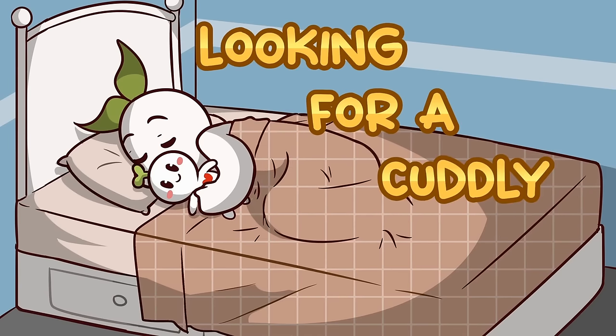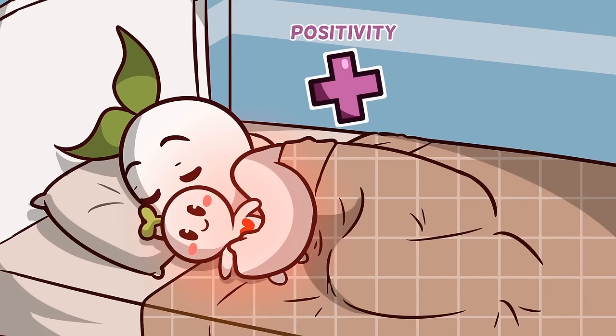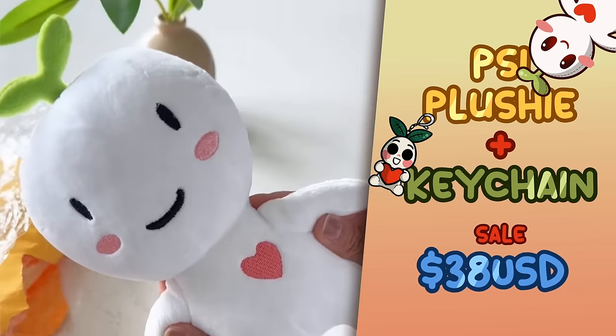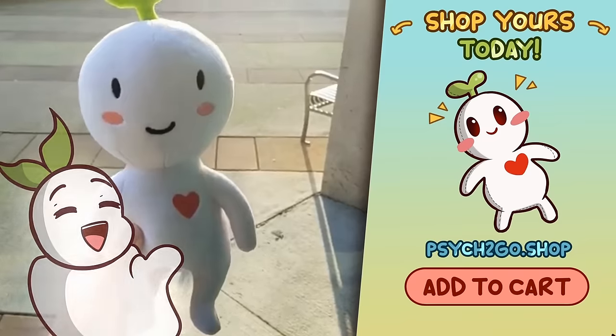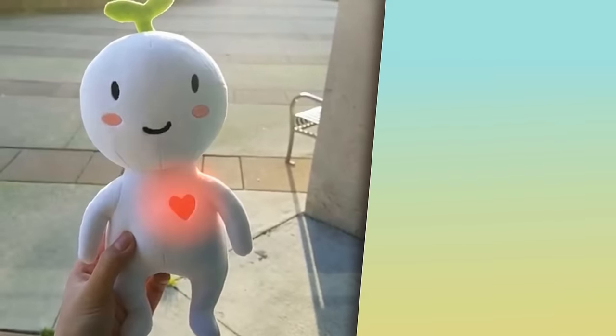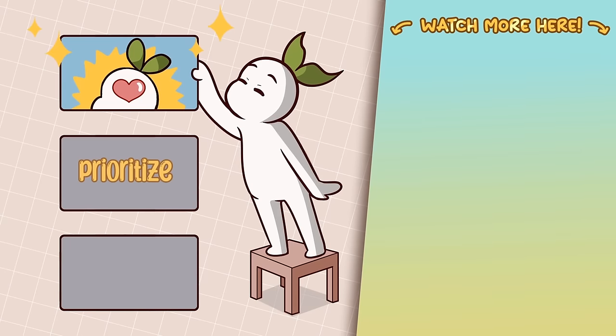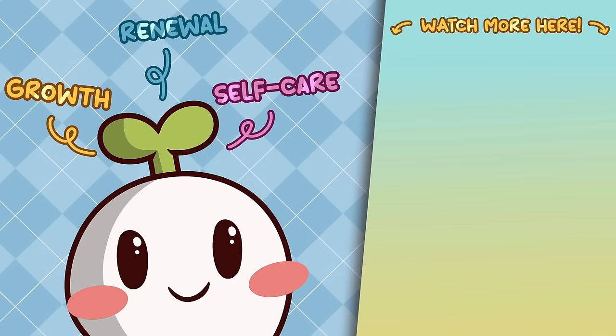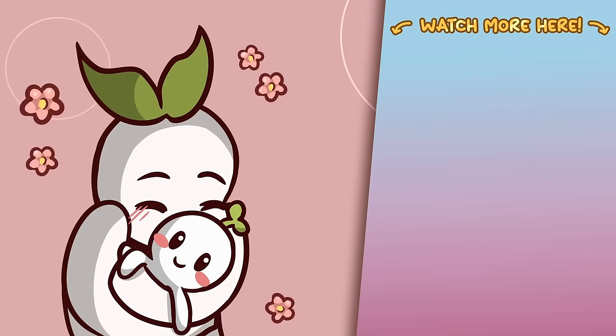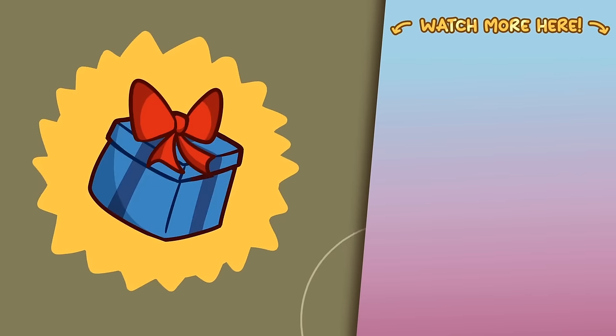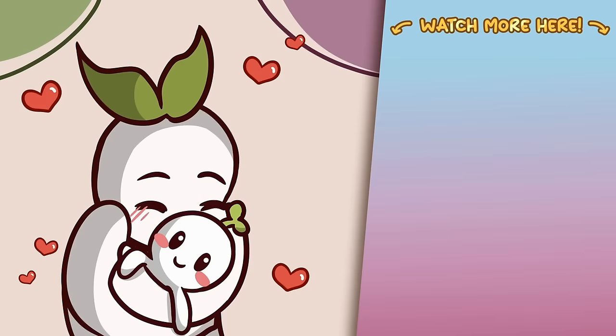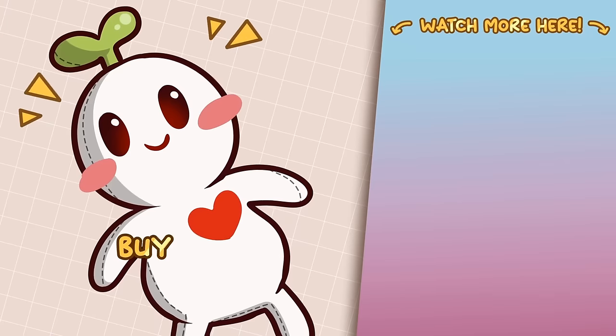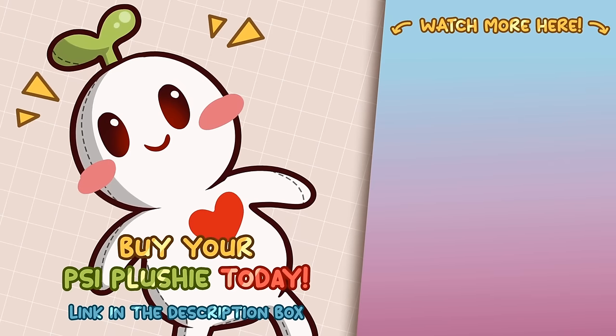Are you looking for a cuddly companion that brings positivity and mental wellness to your daily life? Get your very own Sai. The lovable plushie is here to brighten your days. It embodies the spirit of Psych2Go and serves as a reminder to prioritize your mental well-being. Its green leaf symbolizes growth, renewal, and the importance of self-care. Whether it's for yourself or as a thoughtful gift for a loved one, Sai is ready to be your snuggly friend through all of life's ups and downs. Buy your Sai plushie today. Link is listed in the description box.